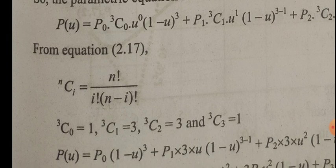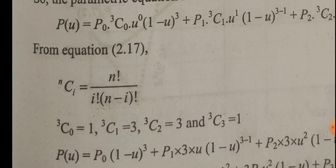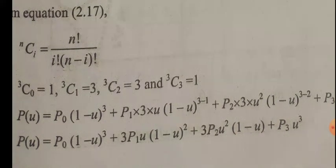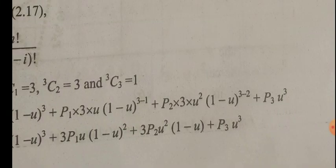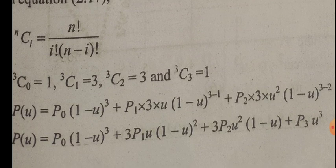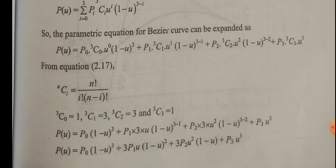Applying the formula, I apply for 3C0, then 3C1, then 3C2, then 3C3 which equals 1. Substituting these values into the equation, we will get: P(u) = P0*(1-u)^3 + 3*P1*u*(1-u)^2 + 3*P2*u^2*(1-u) + P3*u^3. This is the general formula. Now we will apply the control point values.